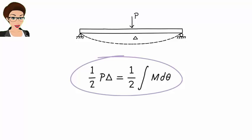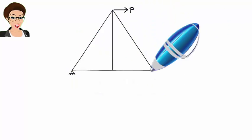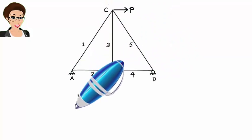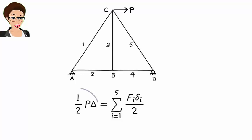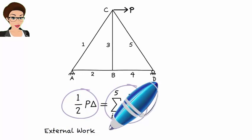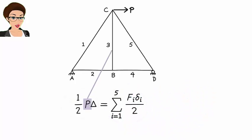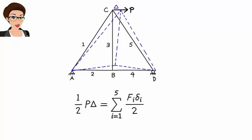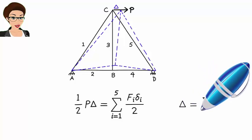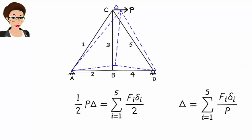The Work Energy Principle can also be used for trusses. For a simple truss, we can write one half p times delta equals the sum of f-i delta-i over 2. The left side represents external work and the right side represents internal energy. Here, p is the applied load, delta is the horizontal displacement under the load, f-i is the axial force in member i, and delta-i is the elongation of the member. So delta equals the sum of f-i delta-i over p, and since the truss is statically determinate, member forces and elongations can be easily calculated.